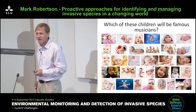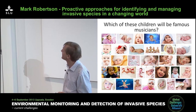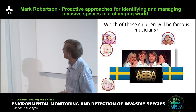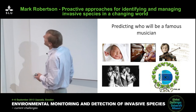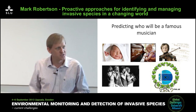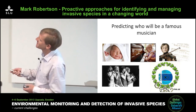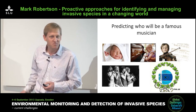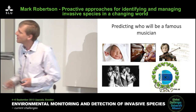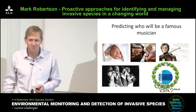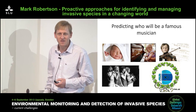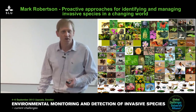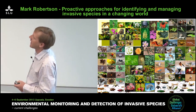Which of these children will become famous musicians? It turns out that these four are famous musicians — they are members of the famous Swedish band ABBA. So how do you go about predicting which of these children will actually become famous musicians? At the baby stage it's extremely difficult. Maybe it becomes easier as they grow up and show some early musical talent, or when they launch their first record.